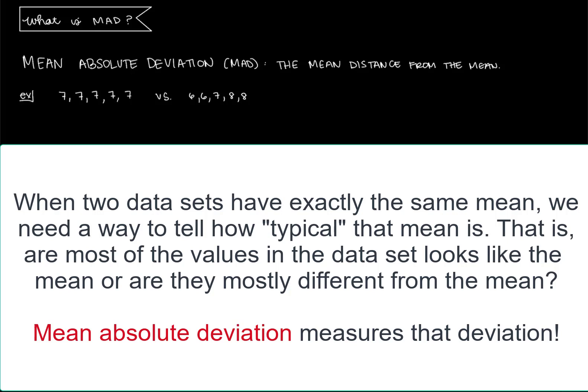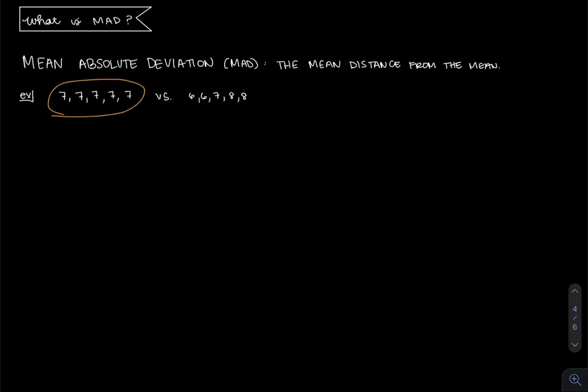I think this will help to understand this measure of spread if we look at an example. Let's look at this data set here, 7, 7, 7, 7, 7. The mean in this example of all sevens is seven.